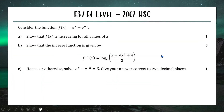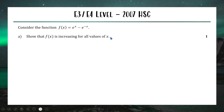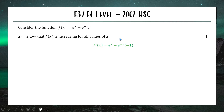Our last question is from 2007 — it has E3 and E4 parts. Students scoring correctly on this in 2007 were typically in the 80–90 range, so it's tough. The function is f(x) = eˣ − e⁻ˣ. Part one, worth one mark, asks us to show f(x) is increasing for all x. We find the derivative: the derivative of eˣ is eˣ, and the derivative of −e⁻ˣ is +e⁻ˣ (multiplying by the derivative of −x, which is −1). So f′(x) = eˣ + e⁻ˣ.